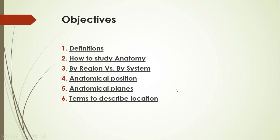Here are the objectives, or what we want to get out from this video lesson. First, we have some definitions: what is anatomy, what is gross anatomy, what is microscopic anatomy. Then how you should study anatomy, the benefits and disadvantages of studying by region or by system, the anatomical position, the anatomical planes, and terms we use to describe location.